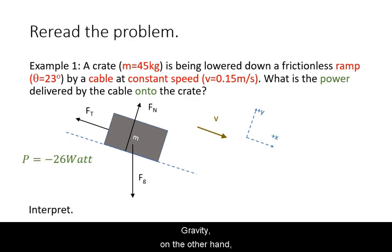Gravity on the other hand is giving the object energy. For the object to retain constant speed, the power given and taken away must be equal.